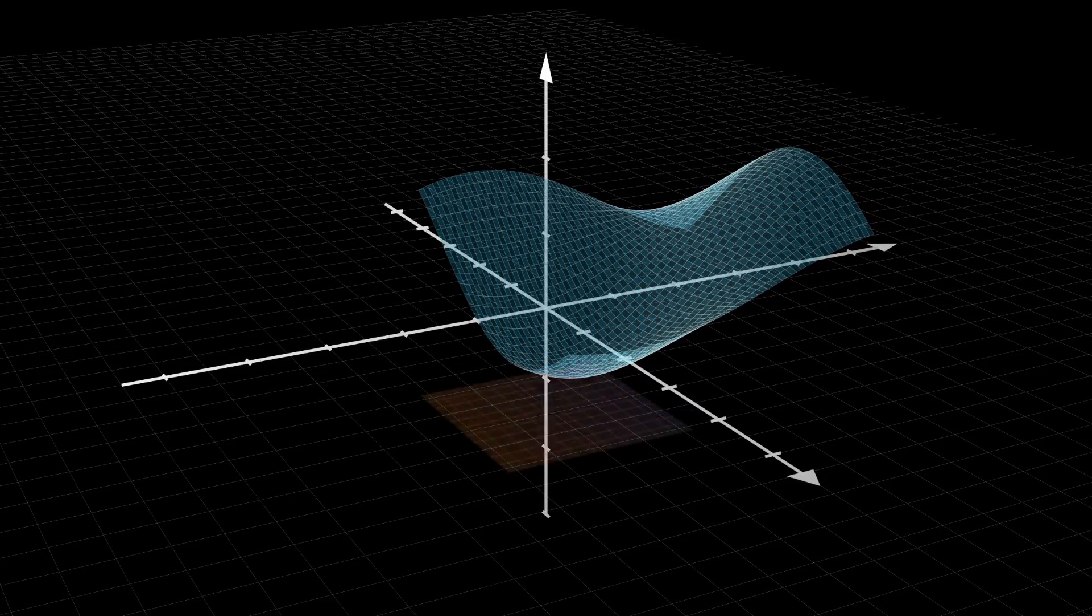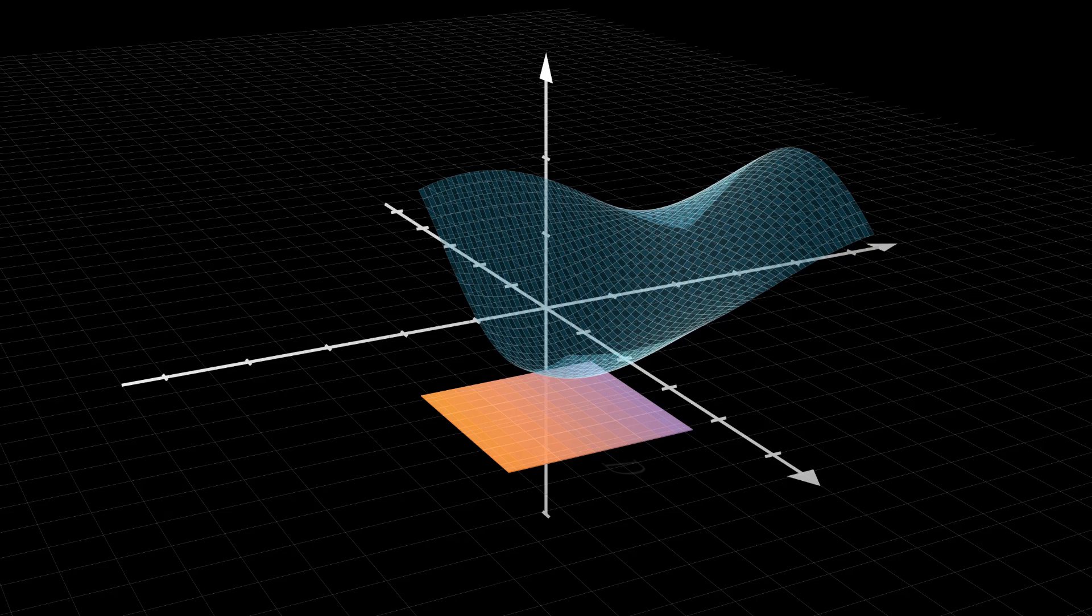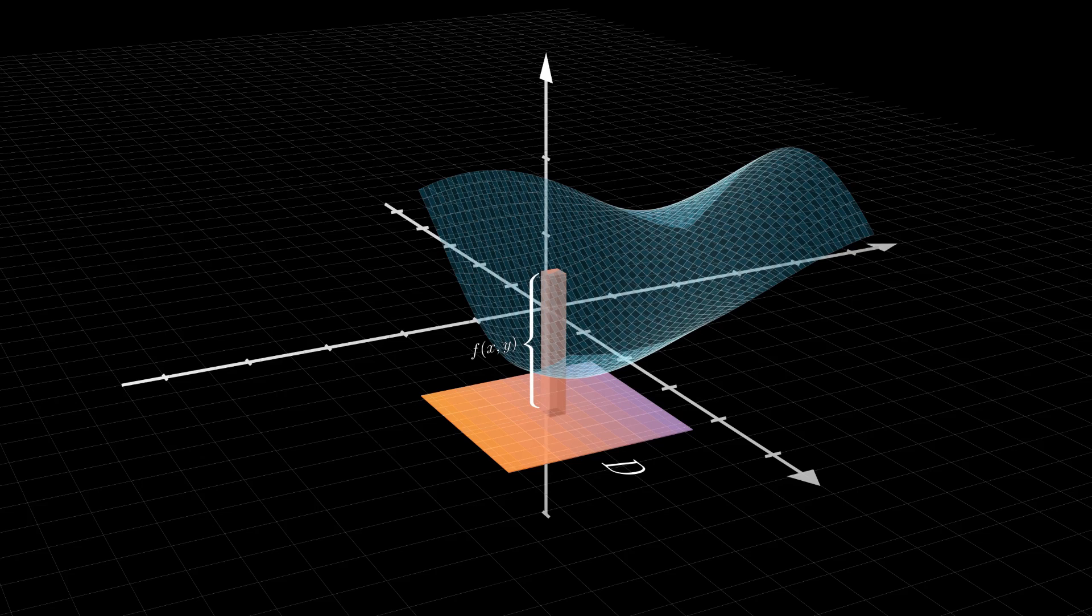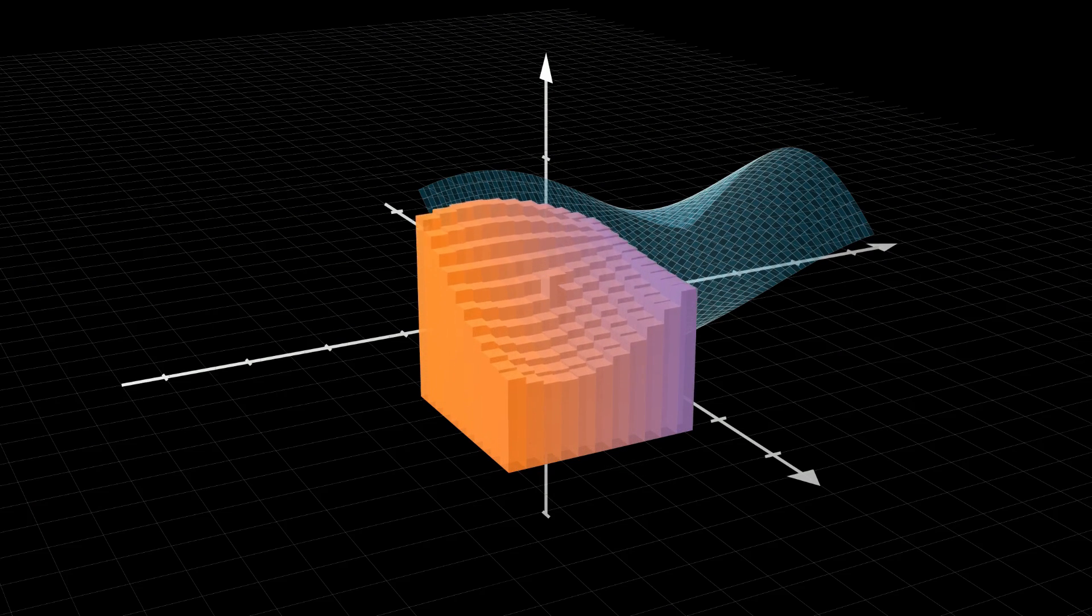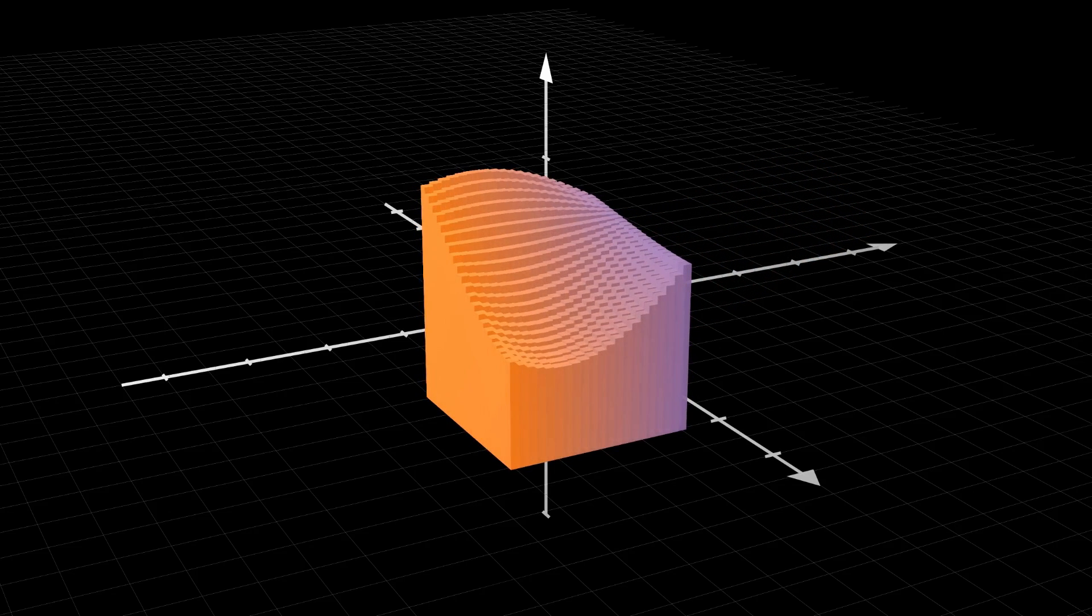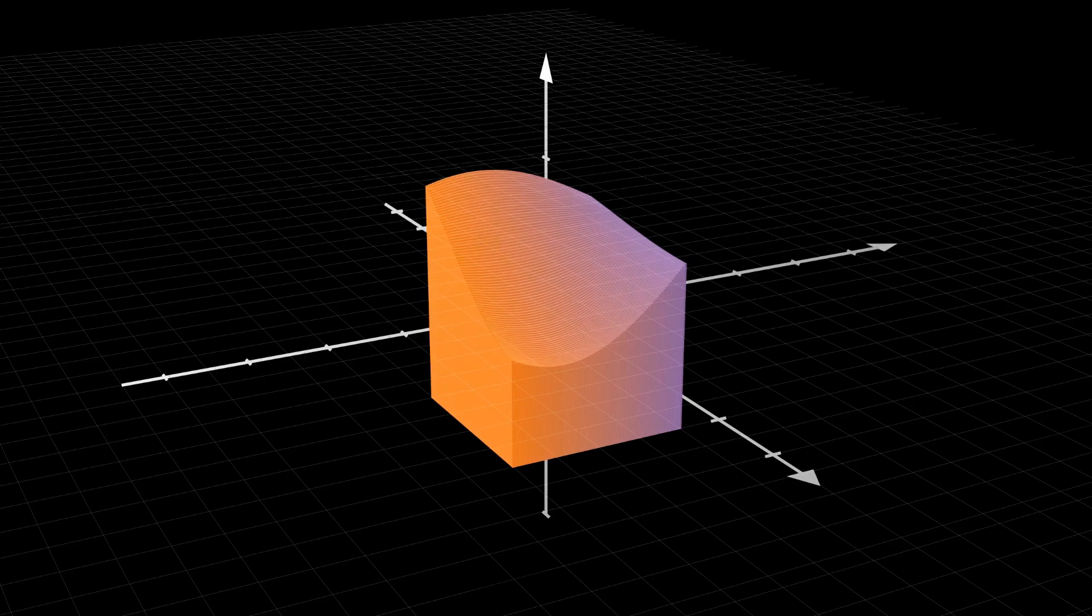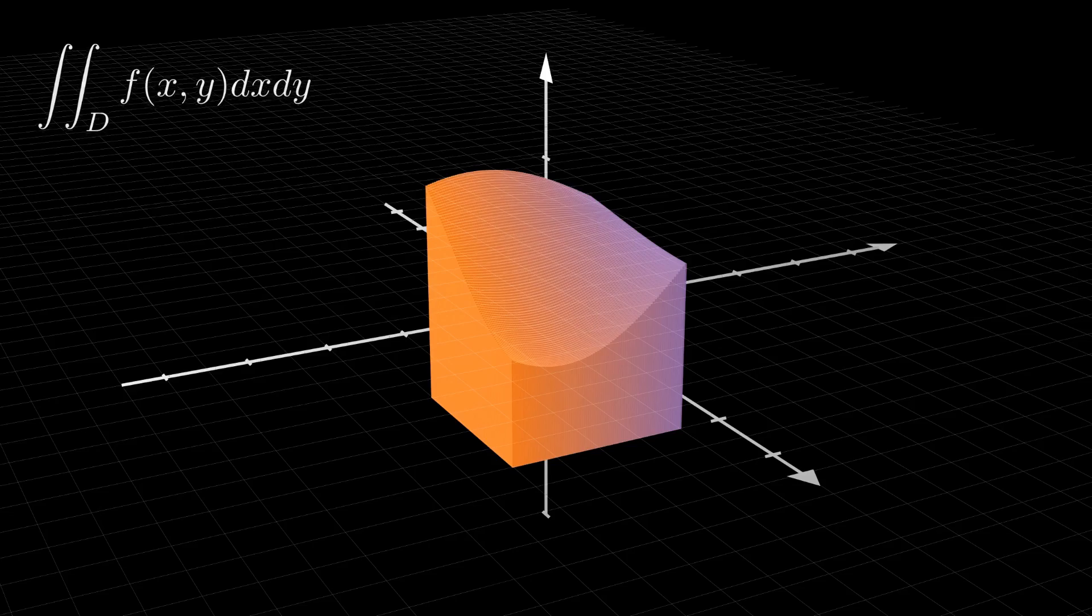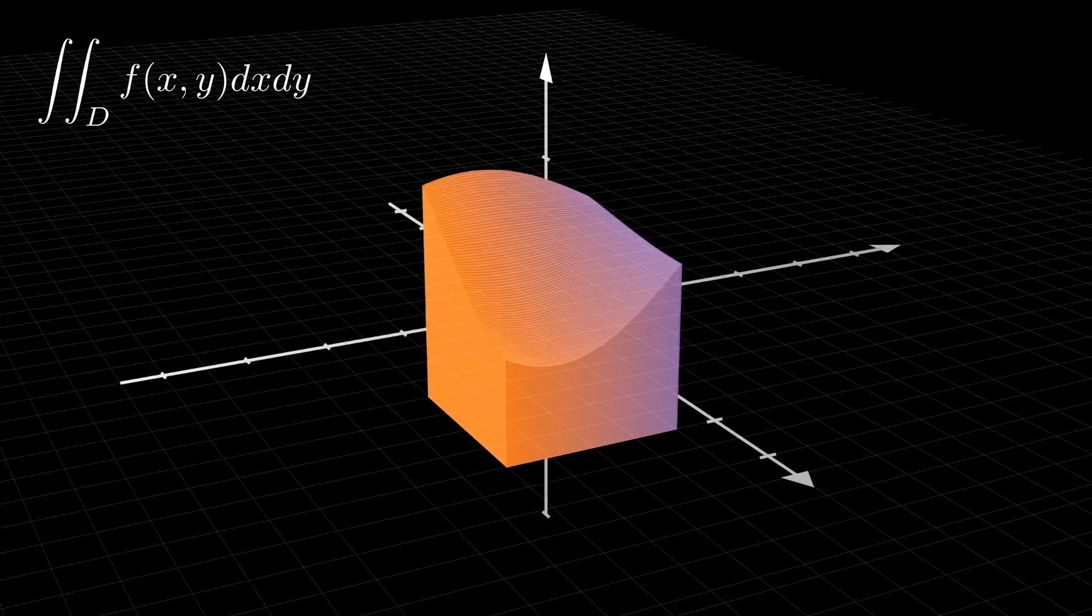Suppose now that we want to evaluate the volume under this surface on a certain domain D. In a very similar way as the one we used before, we could raise from the domain D a prism until it touches the surface. We now apply the same logic as before. The more and finer these prisms will be, the more precise the volume will be. To find the volume under a function of two variables is to evaluate a double integral.